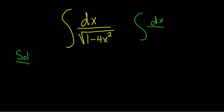dx over the square root of a squared minus x squared, that's equal to the arc sine of x over a plus c.